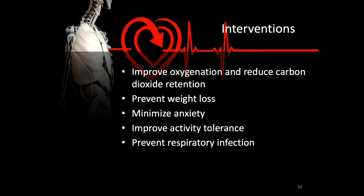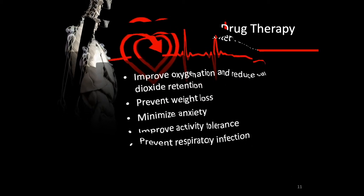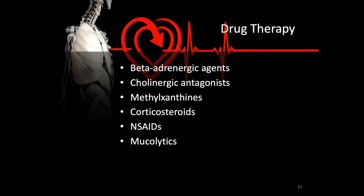Other interventions include preventing weight loss by supplying high-caloric, small-quantity food; minimizing anxiety to reduce oxygen consumption; improving activity tolerance through limited but scaled exercising; and preventing respiratory infection through lifestyle changes and advising the patient to avoid places where they might acquire one. Drug therapy is similar to that of asthma and includes beta-adrenergic agents, cholinergic antagonists, methylxanthines, corticosteroids, non-steroidal anti-inflammatory drugs, and mucolytics when mucus is too thick. However, the best intervention for thick mucus is hydration — encourage the patient to drink plenty of water to loosen secretions, if they don't show signs of heart failure.